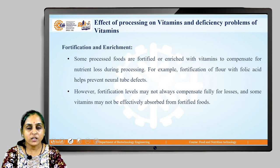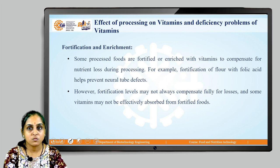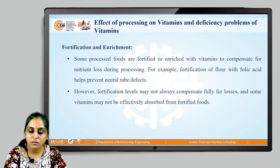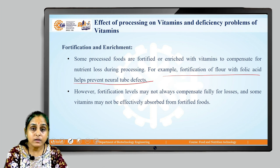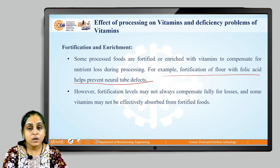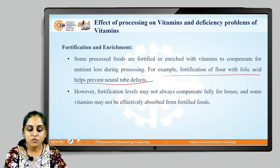Fortification and enrichment also relate to the effect of processing on vitamins. Some processed foods are fortified or enriched with vitamins to compensate for nutrient loss during processing. For example, fortification of flour with folic acid helps prevent neural tube defects. However, fortification levels may not always fully compensate for losses, and some vitamins may not be effectively absorbed from fortified foods.